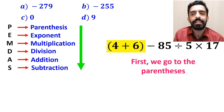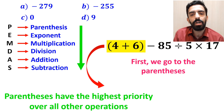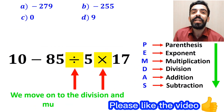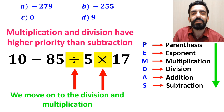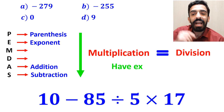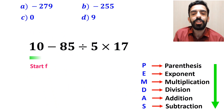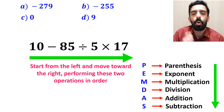We must perform all operations strictly from top to bottom according to the PEMNAS rule. First we go to the parenthesis, because parenthesis have the highest priority over all other operations. So we rewrite the expression as 10 minus 85 divided by 5 multiplied by 17. Next we move on to division and multiplication, since they have higher priority than subtraction. Importantly, multiplication and division have exactly the same level of priority, so the best approach is to start from the left and move toward the right.